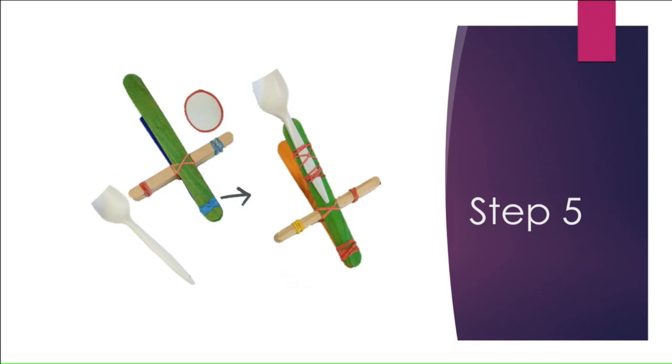Last but not least, you're going to join on your fork. So take the fork and another rubber band and join it on with that rubber band all the way down the arm there so that it holds tightly and you can use that for your catapult.